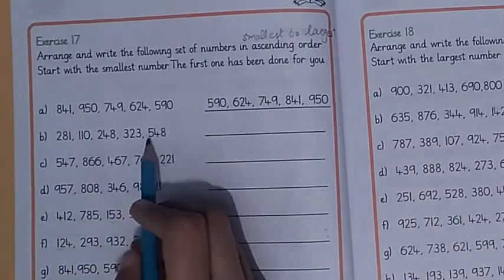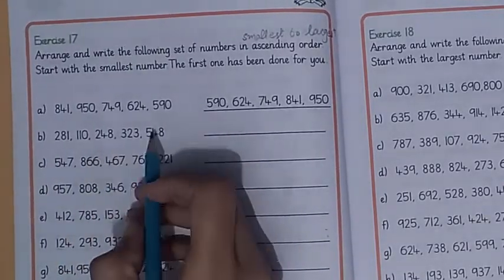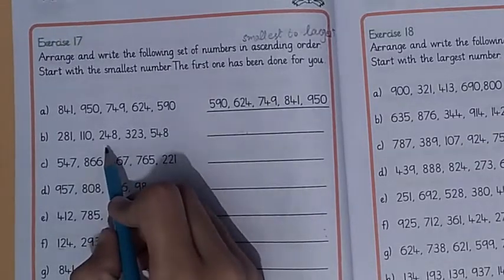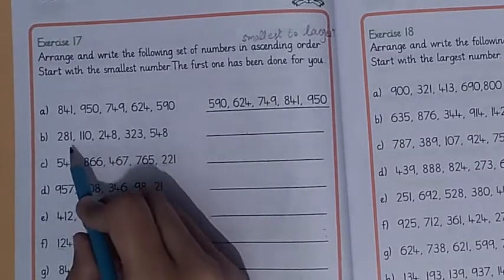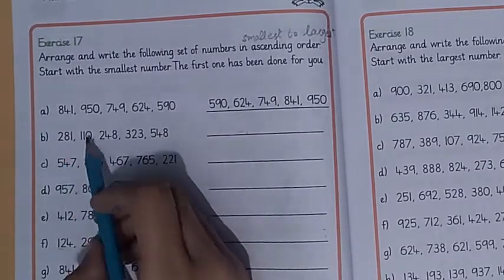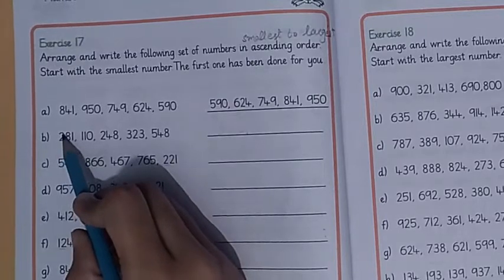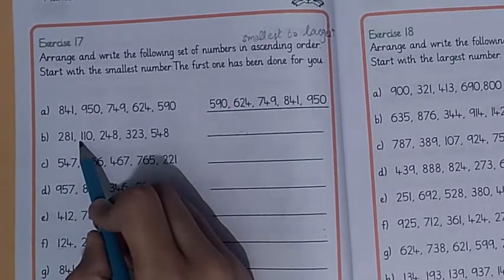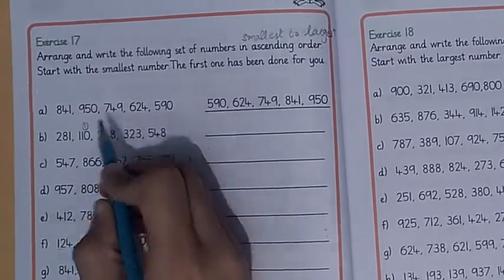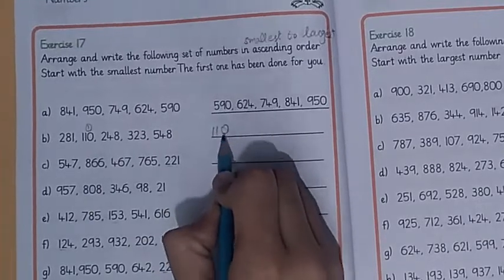In part B, we find out which one is the smallest number. These are three-digit numbers, so we will look at the hundreds place to find the smallest. We have two hundred and one hundred — so one hundred is the smallest number.